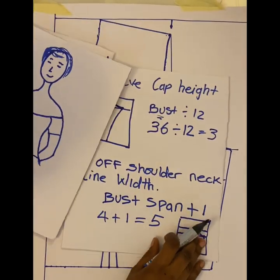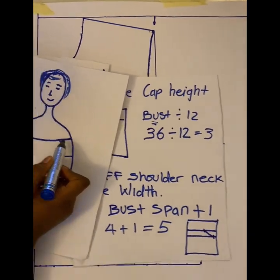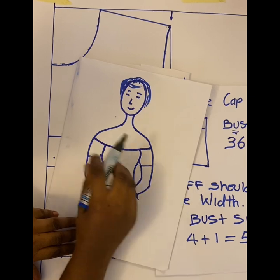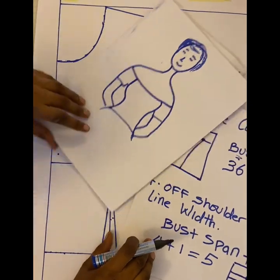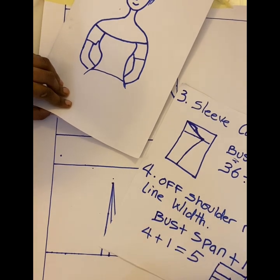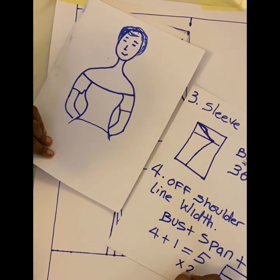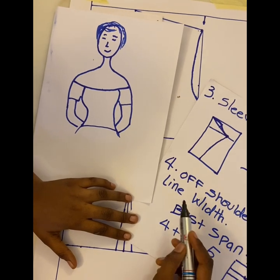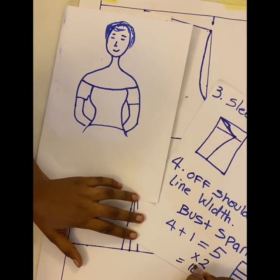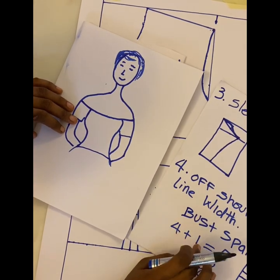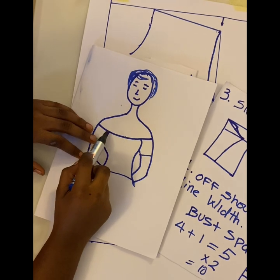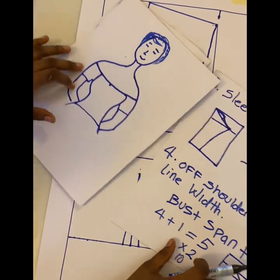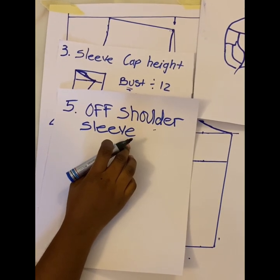Your off shoulder neckline width is this line here. When the fabric is open, that gives the full off shoulder neckline width — so it's 5 times 2, which equals 10. For someone with a bust span of 4, the off shoulder neckline width from one side to the other is 10 inches.